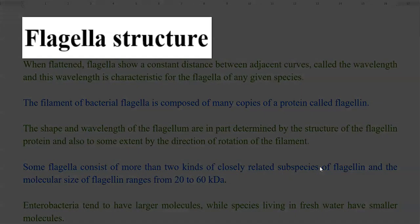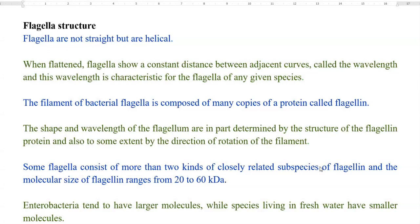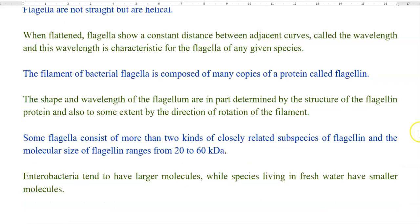Next, we look at the structure of flagella. Flagella are not straight but are helical in nature. If you flatten the flagella, they show a constant distance between adjacent curves, referred to as a wavelength. This wavelength is a characteristic pattern for the flagella in any given species of bacteria. The filament of bacterial flagella is composed of several copies of a protein called flagellin. The shape and wavelength are in part determined by the structure of the flagellin protein. Some flagella consist of more than two types of closely related subspecies of flagellin proteins that vary in molecular size between 20 to 60 kilodaltons.